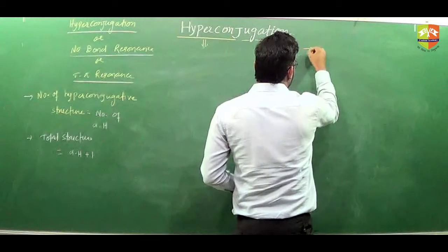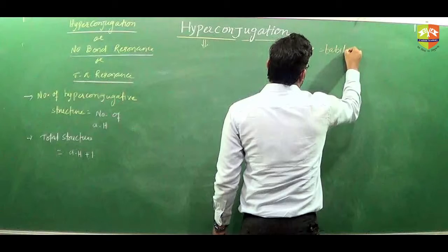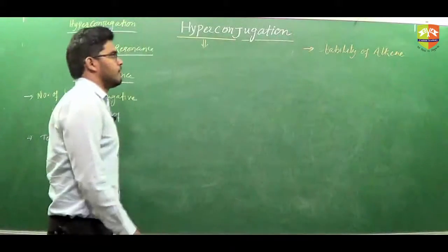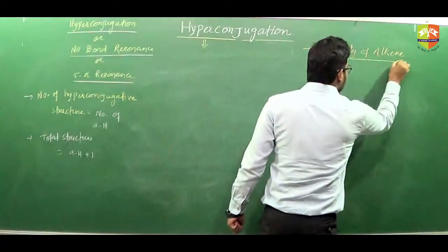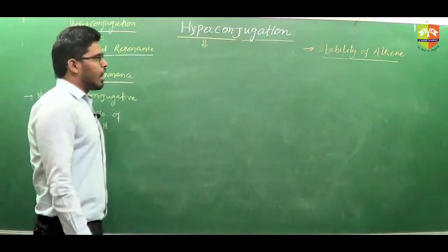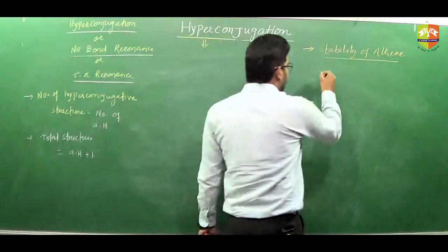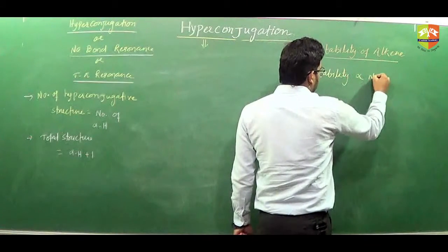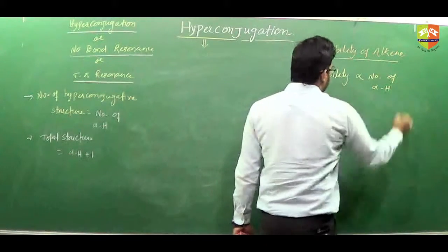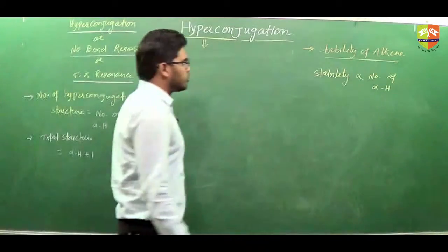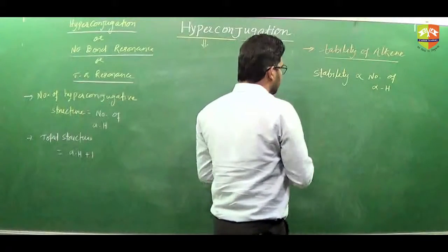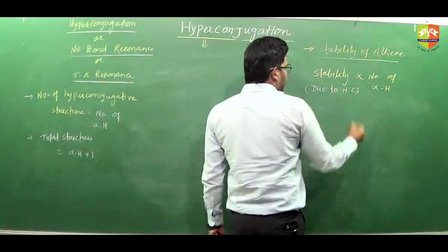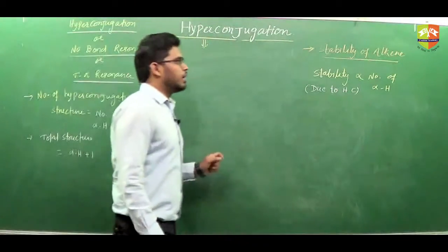The next thing we are discussing is stability of alkenes. Stability of alkene depends on the number of hyperconjugative structures. More hyperconjugative structures, more will be the stability. So we can say stability is directly proportional to the number of alpha hydrogens. This is stability due to hyperconjugation — if you compare stability due to hyperconjugation, we just calculate the number of alpha hydrogens.